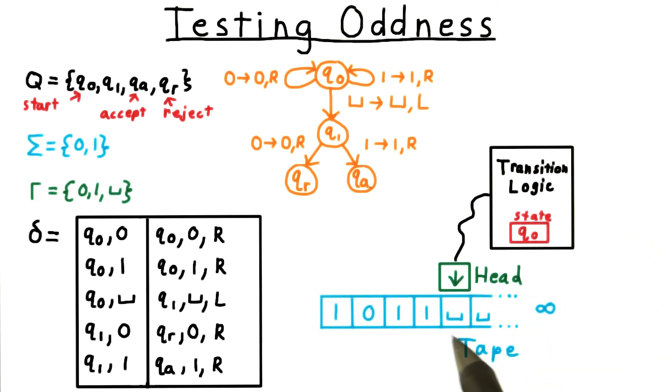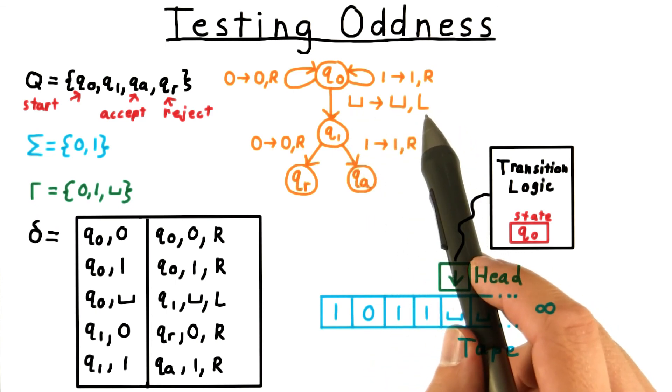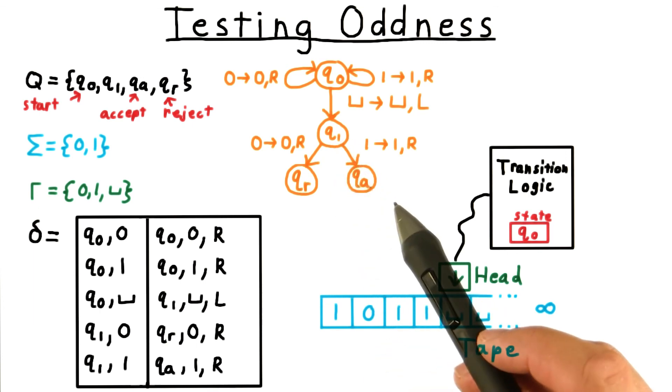Finally, the head reads a blank symbol. The transition table tells us to write a blank symbol, and move the head to the left, and to switch the state to q1.